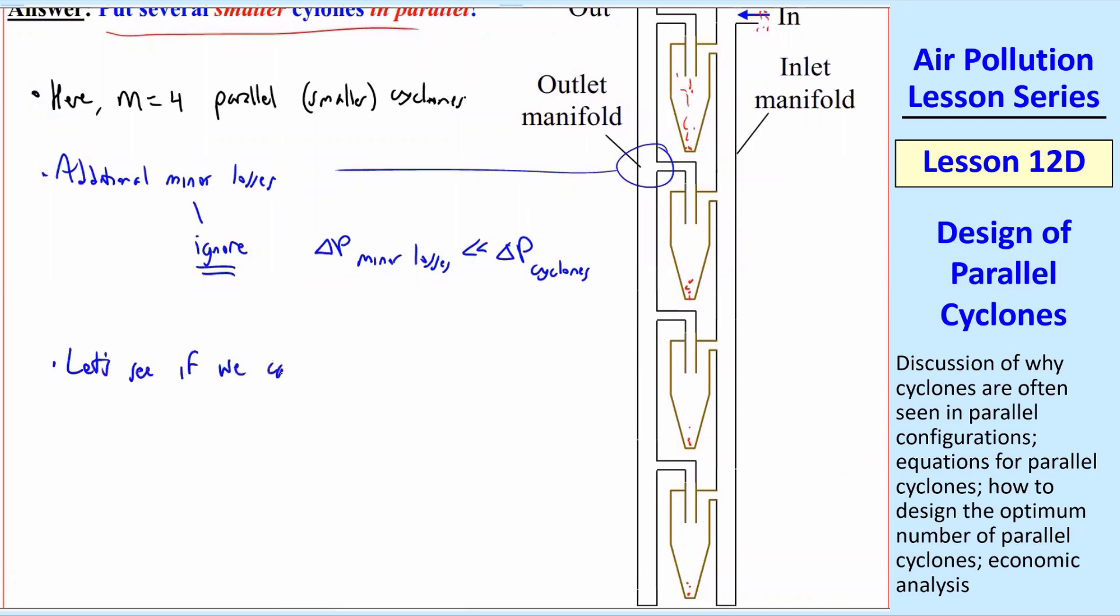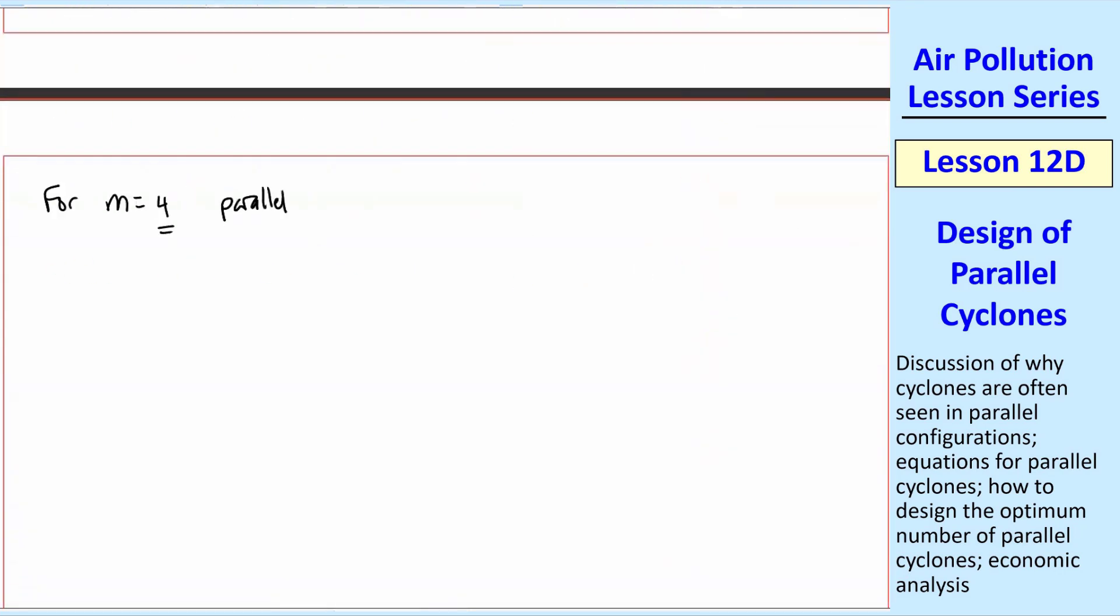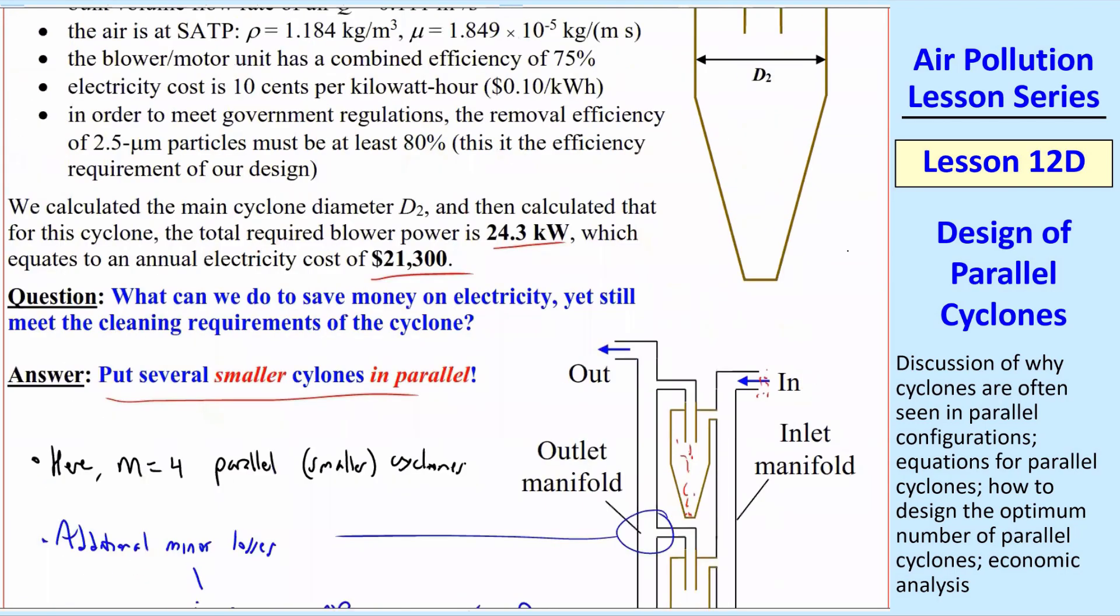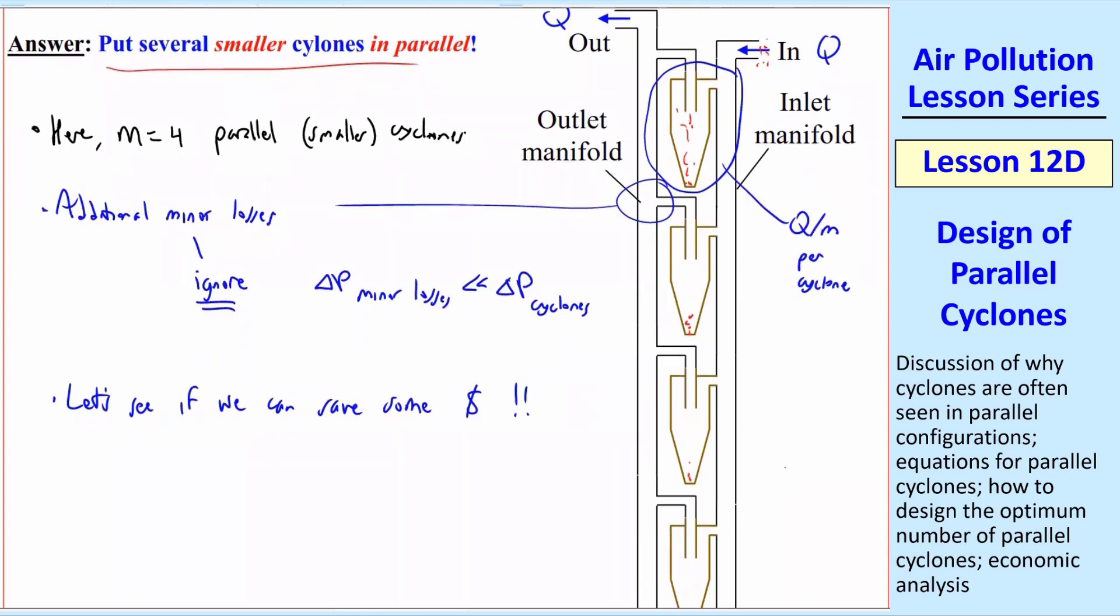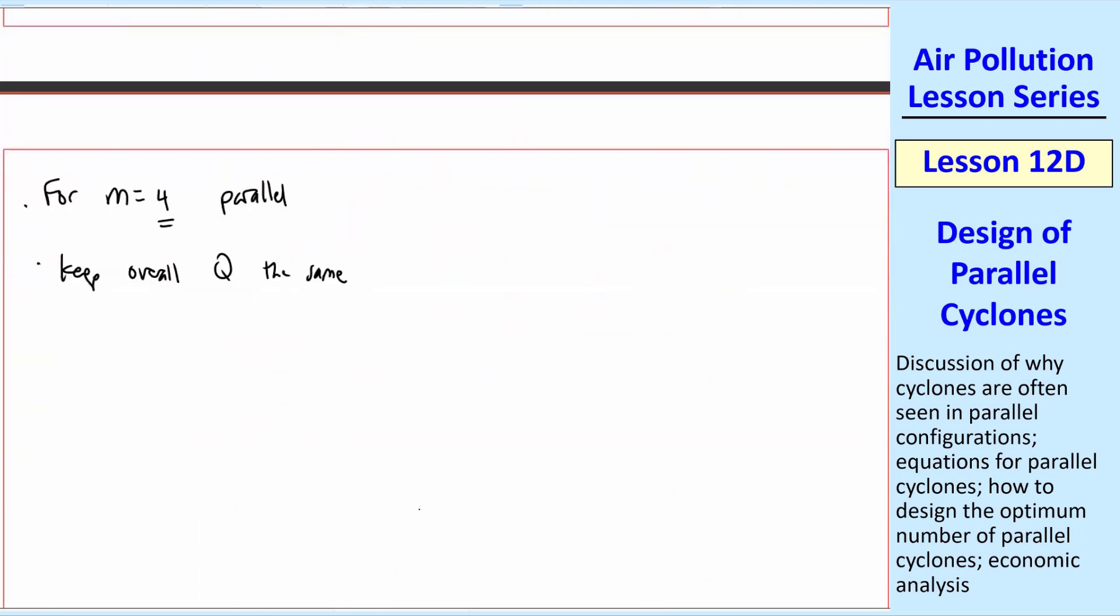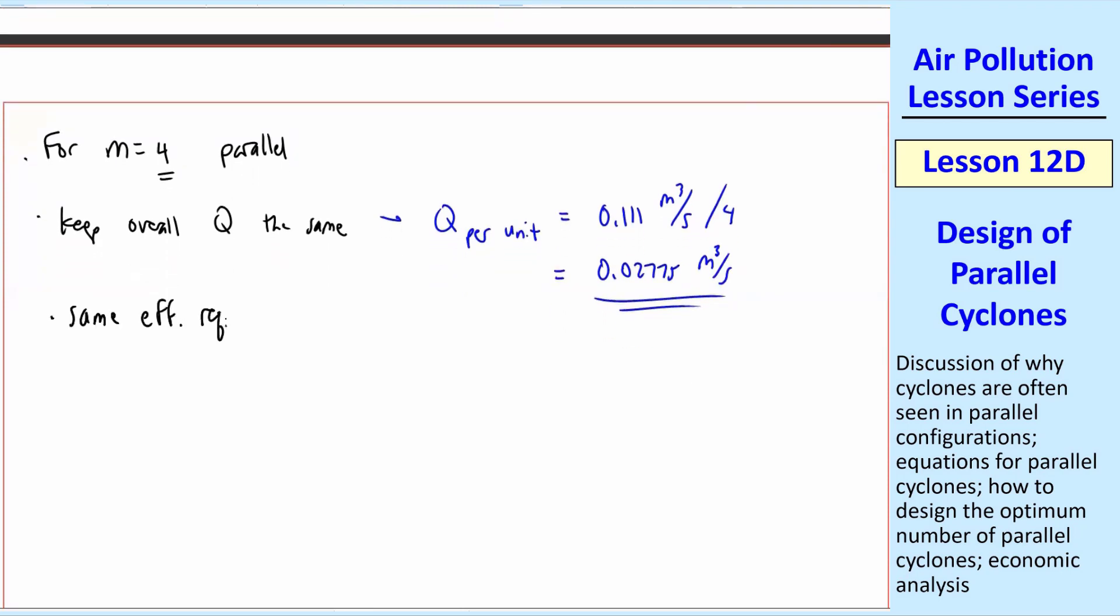So let's see if we can save some money, which is always a good thing to do. Let's analyze this for M equal four parallel cyclones. What we're going to do is we keep the overall or total Q the same because all we're doing is replacing this one big cyclone with some Q coming in. Now we have the same Q coming in and Q going out. But for each individual cyclone is Q divided by M per cyclone. So we're going to send only, in this case, one-fourth of that Q into each cyclone. And so Q per unit, unit meaning cyclone, is 0.111 meter cubed per second divided by four. So this turns out to be 0.02775 meter cubed per second per unit. We have the same efficiency requirement, which was 80% at 2.5 micron particles. PM 2.5 is what we're interested in here.